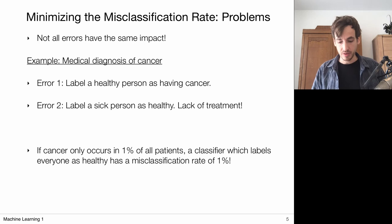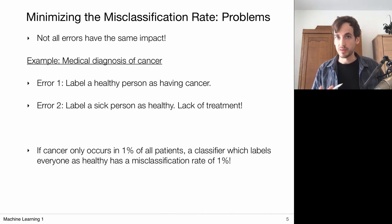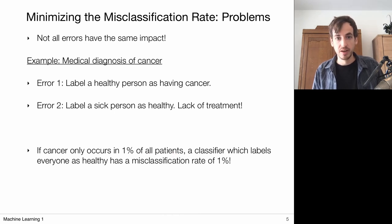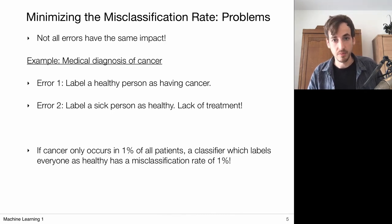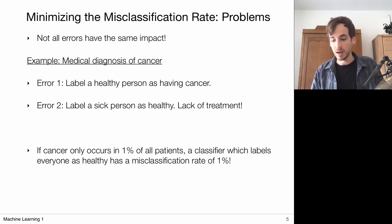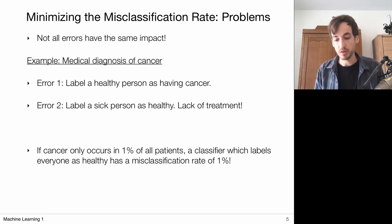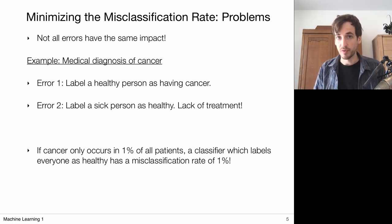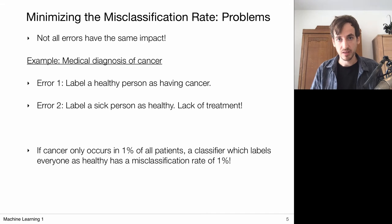There's also the issue of class imbalance. Suppose cancer only occurs in 1% of all patients — if I build a classifier that classifies everybody as healthy, my misclassification rate will only be 1%. You might say that's a decent classifier, but this gives a skewed view of performance. Class imbalance is something you really need to take into account when making classification algorithms.